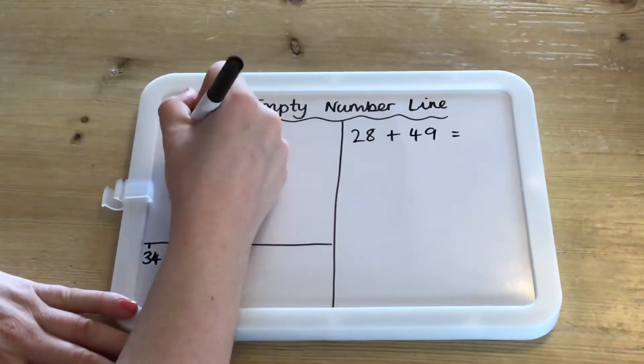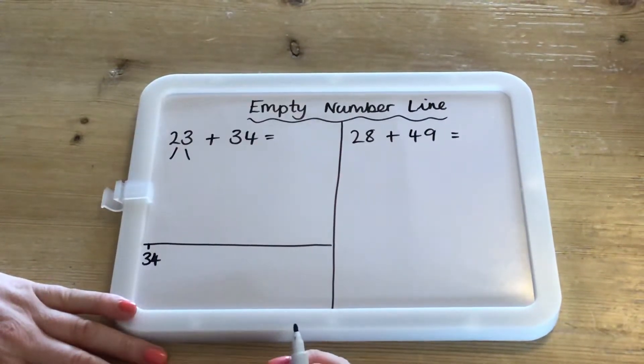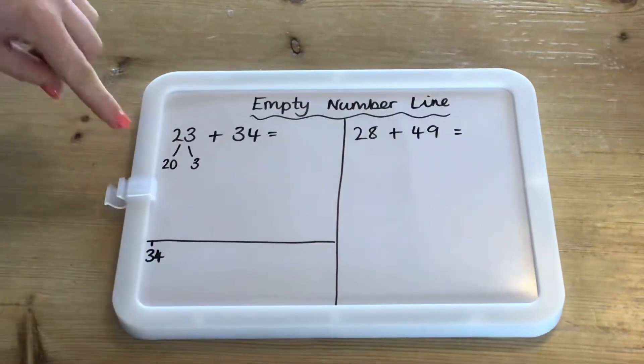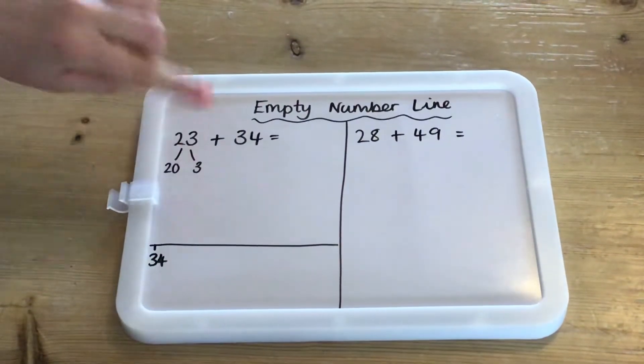You're then going to look at your smaller number and partition that into tens and ones. So when we partition 23, we partition it into 20 and 3.